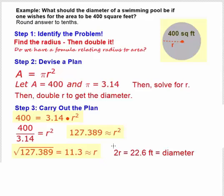And when we double that value of r, the radius, we get 2r = 22.6 feet, which is our diameter.